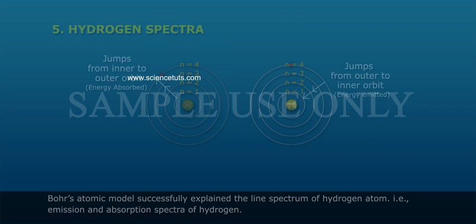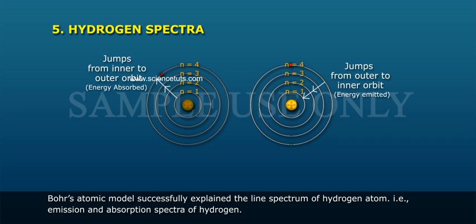5. Hydrogen spectra. Bohr's atomic model successfully explained the line spectrum of hydrogen atom, i.e. emission and absorption spectra of hydrogen.